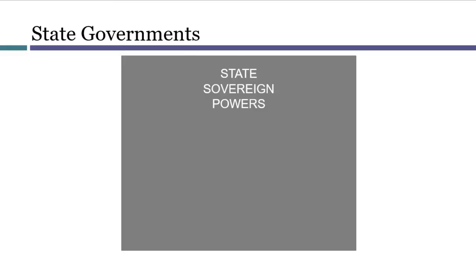So the states aren't limited to exercising only those powers contained in a list. The political theory behind American state governments is that they are freestanding, sovereign governments. They can do anything that any nation could do. With regard to sources of power, that means there's no specific list or enumeration of a state's powers — the state has all the same powers of any sovereign nation, and in particular, it can make laws on any subject.